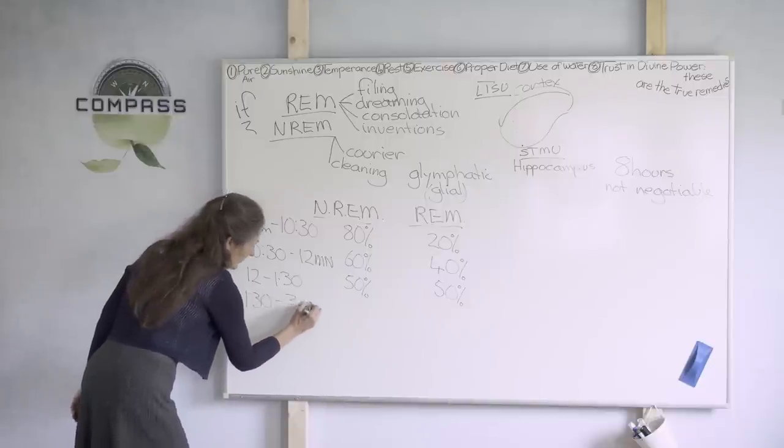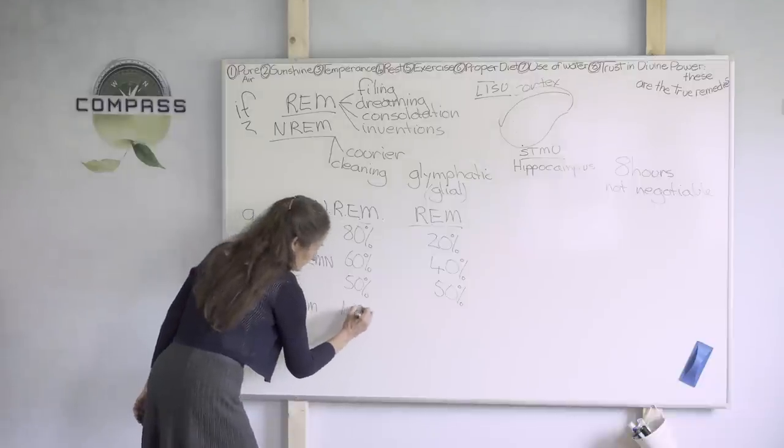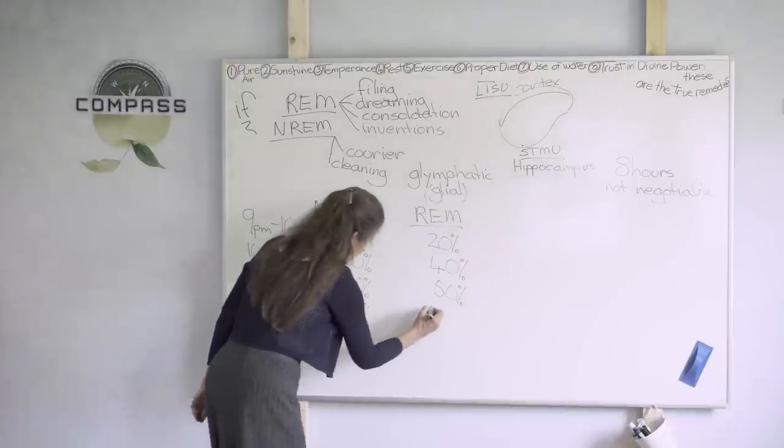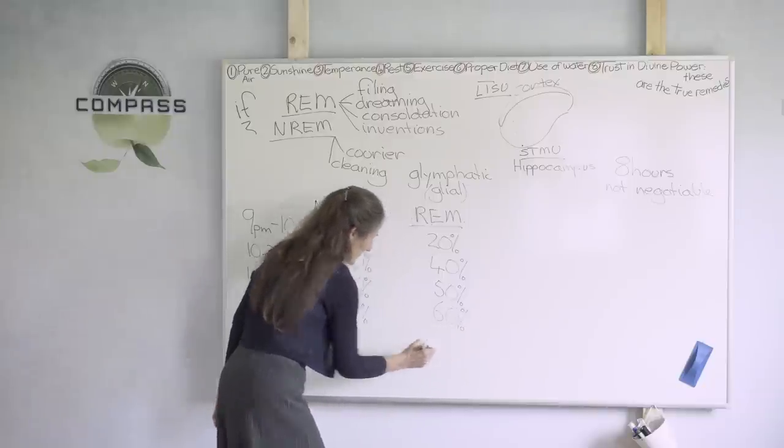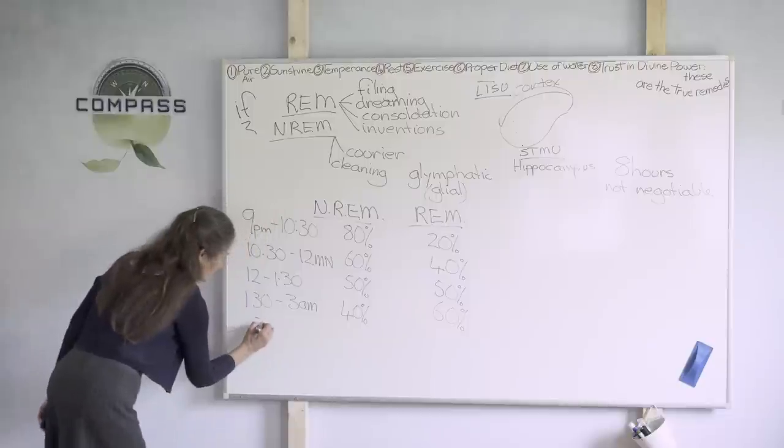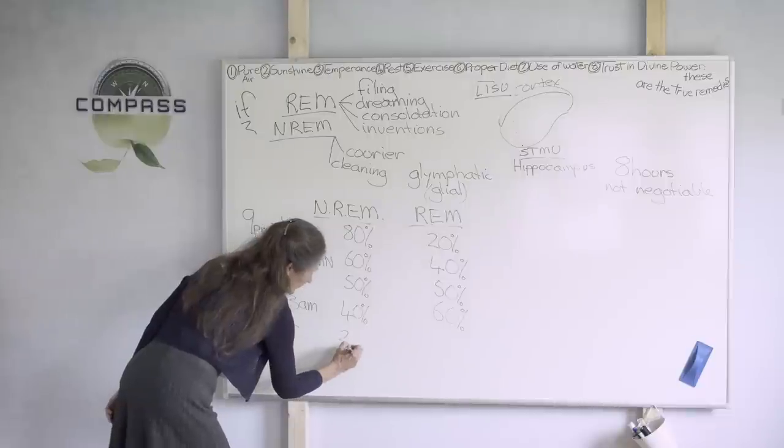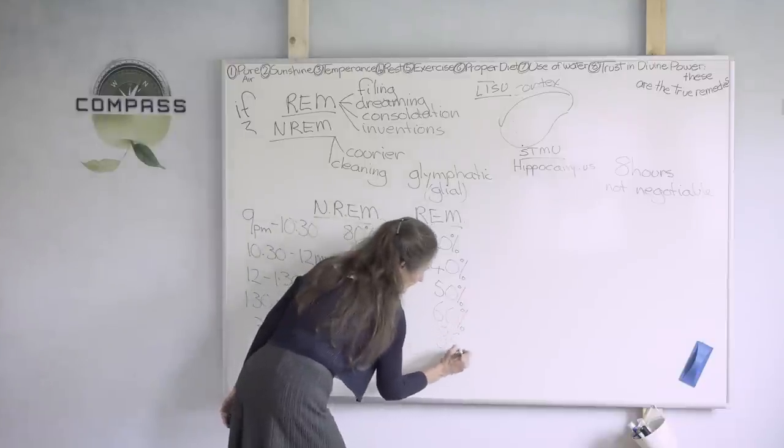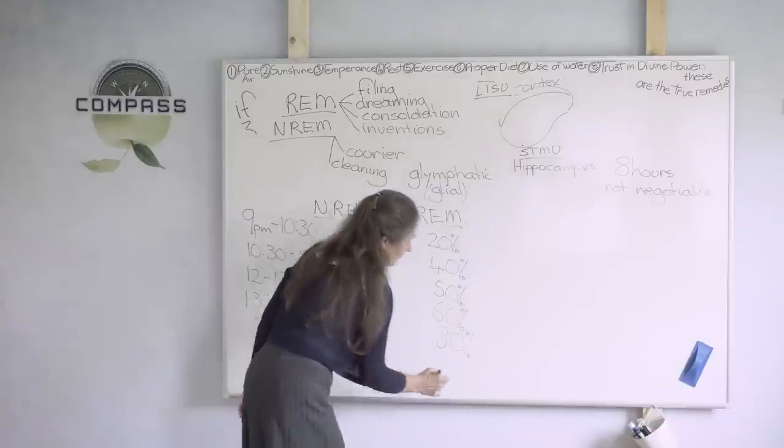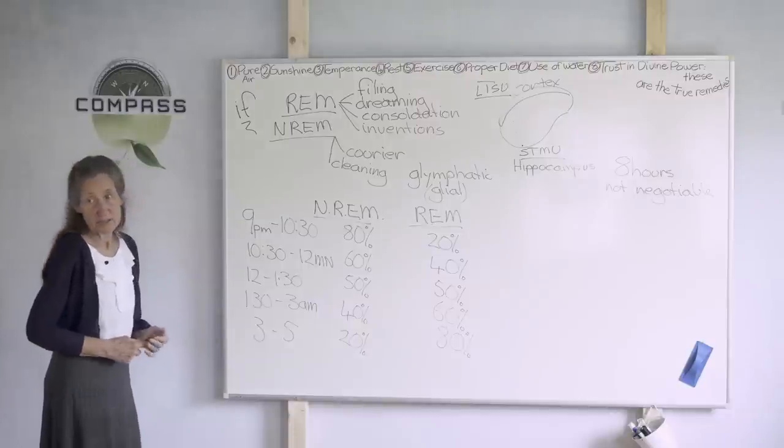Moving on from 1:30 to 3. From 1:30 to 3 a.m., we've got 40% non-rapid eye movement, and 60% rapid eye movement. And then from 3 to 5, our last two hours, we've got 20% non-rapid eye movement, and we've got 80% rapid eye movement time.